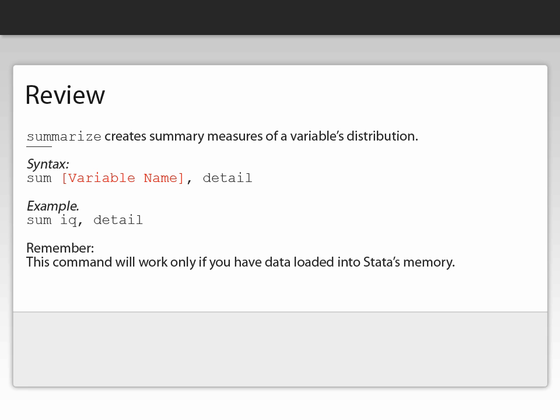Let's review. To get summary statistics of a variable in Stata memory, we use the SUM command. The syntax is SUM, space, and then the variable name, comma, space, detail. Remember, this command will only work if you've loaded data into Stata memory.